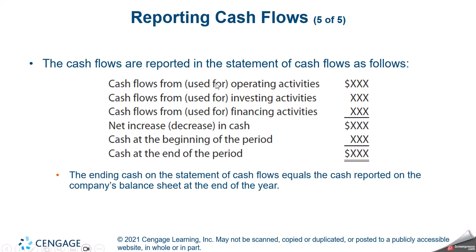How it all comes together: we have cash flow from or used in operating activities — a positive or negative number, with a lot of details in there — then cash flow from or used in investing activities, then cash flow from or used in financing. We sum all of those up to find our net increase or decrease in cash. We look at our beginning cash balance from the balance sheet; that plus or minus gives us our ending cash balance. You can always double-check: the cash at end of period should match the cash reported on your balance sheet at year end.